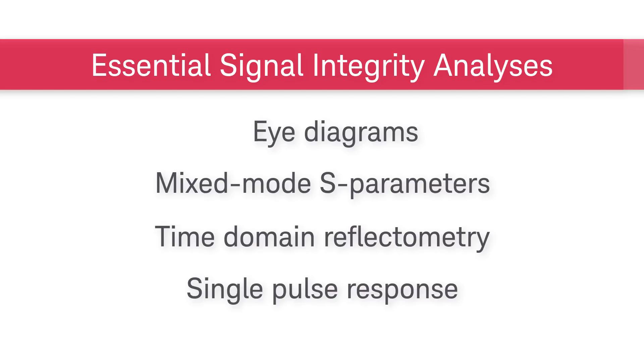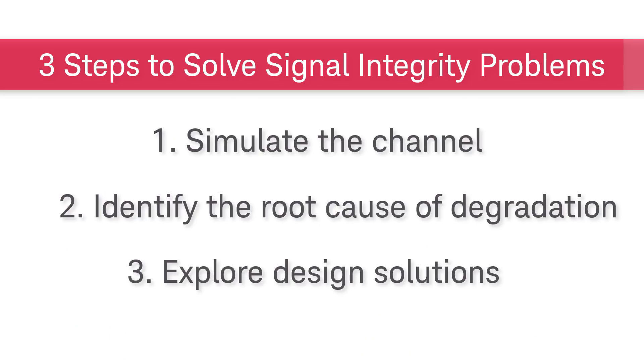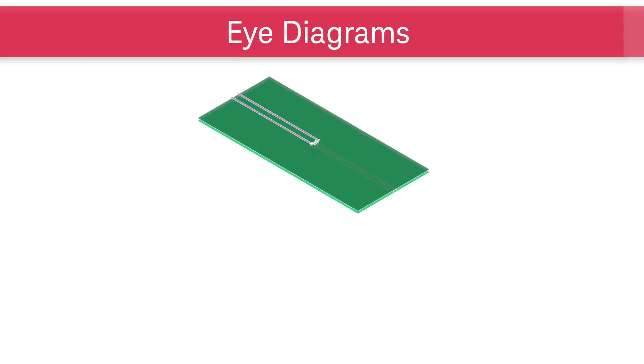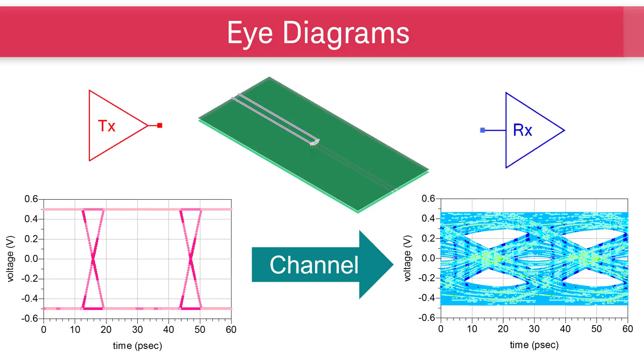Throughout this video, I will be using an ADS workspace. The link to the workspace is available on the screen and also in the description. To start solving signal integrity problems, we will first simulate the channel. Given a channel, a transmitter, and a receiver, the eye diagram tells us how much the channel degrades the transmitted signal.